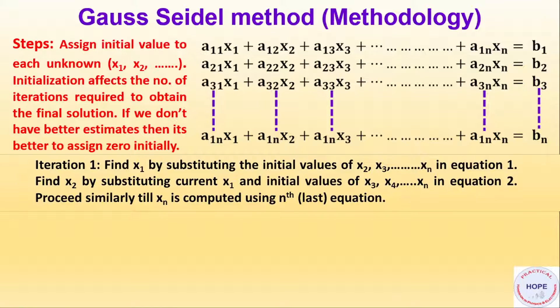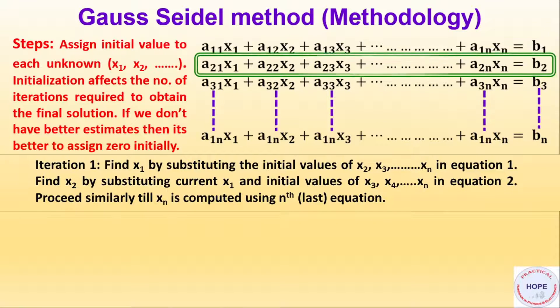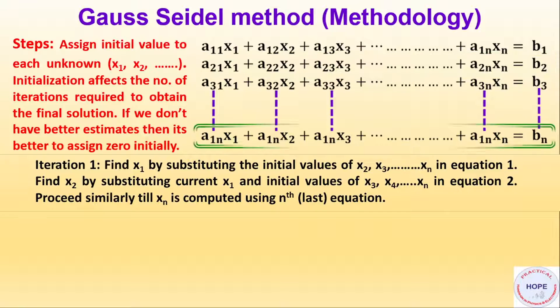Find x1 by substituting the initial values of x2, x3 till xn in equation 1. This is equation 1. Find x2 by substituting current x1 and the initial values of x3, x4 till xn in equation 2. This is equation 2. Proceed similarly till xn is computed using nth or last equation.